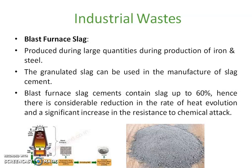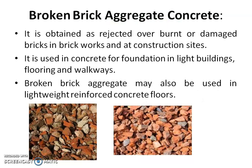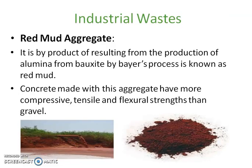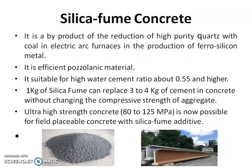Red mud aggregate is obtained from the alumina manufacturing process, that is from the ore bauxite, by means of the Bayer process. This mud is called red mud. It has very good compressive strength, tensile strength, and flexural strength. The next one is silica fume, obtained from ferro-silicon metal production. It is a very good pozzolanic material. You can replace 3 to 4 kg of cement with 1 kg of silica fume.